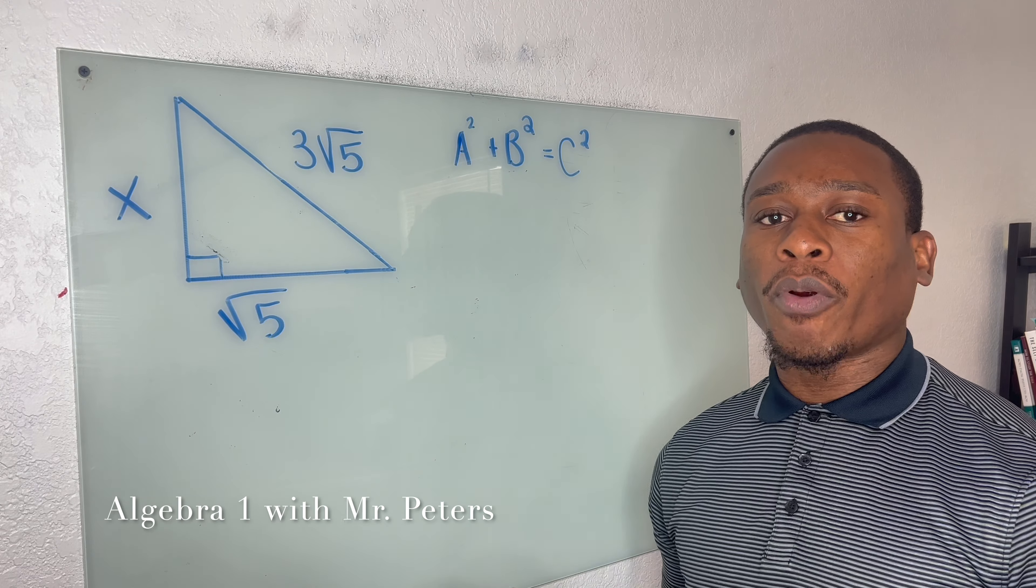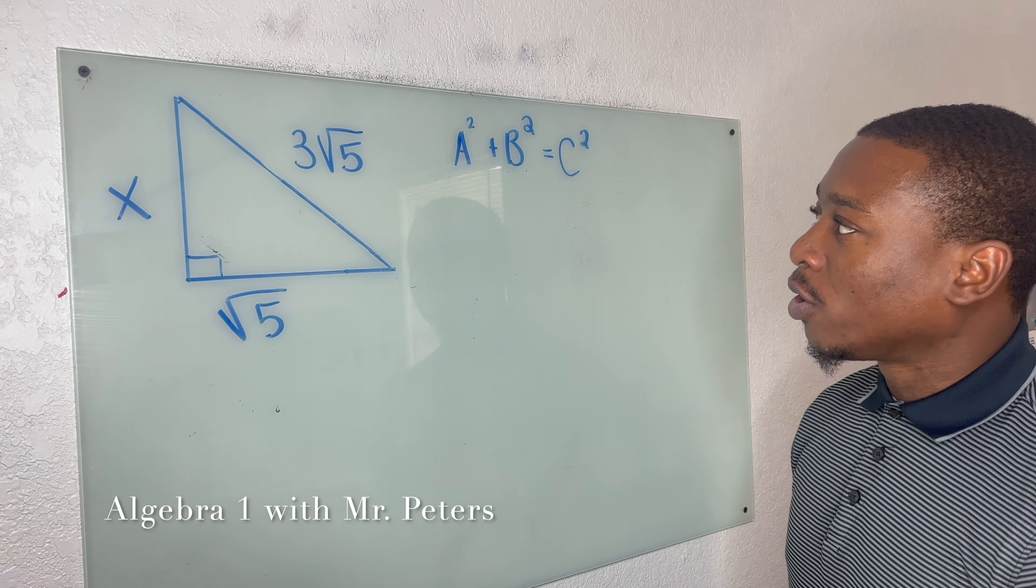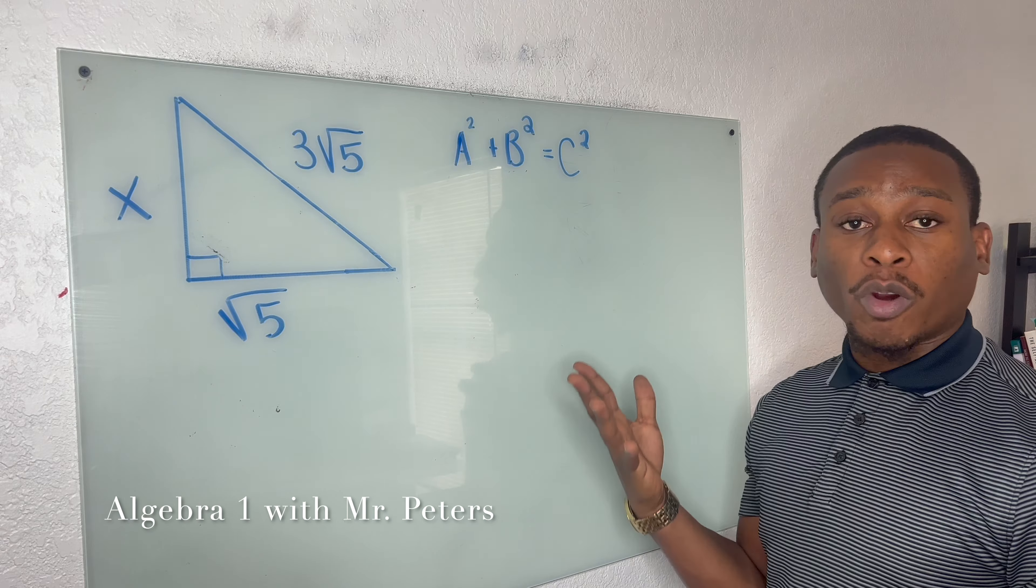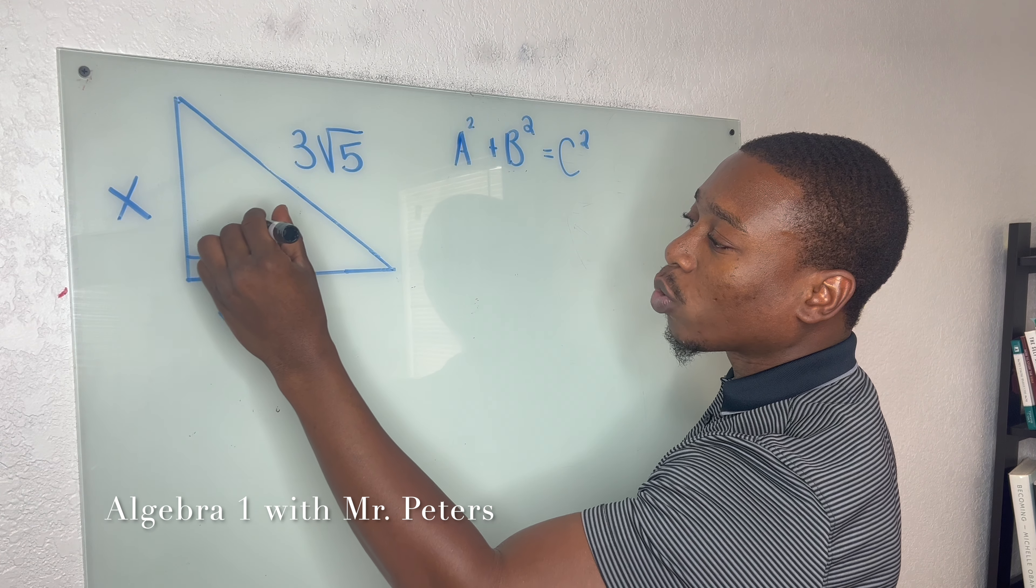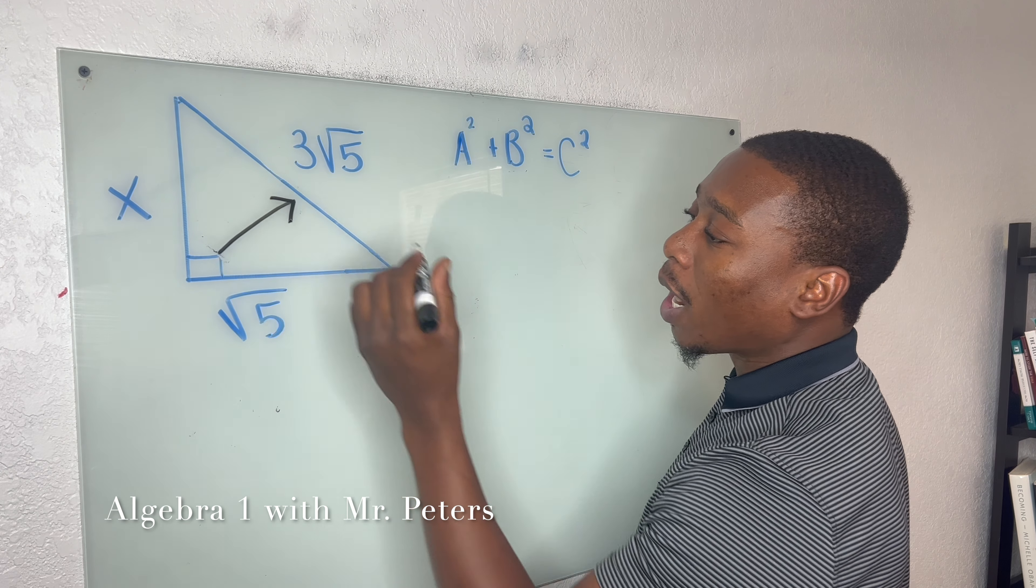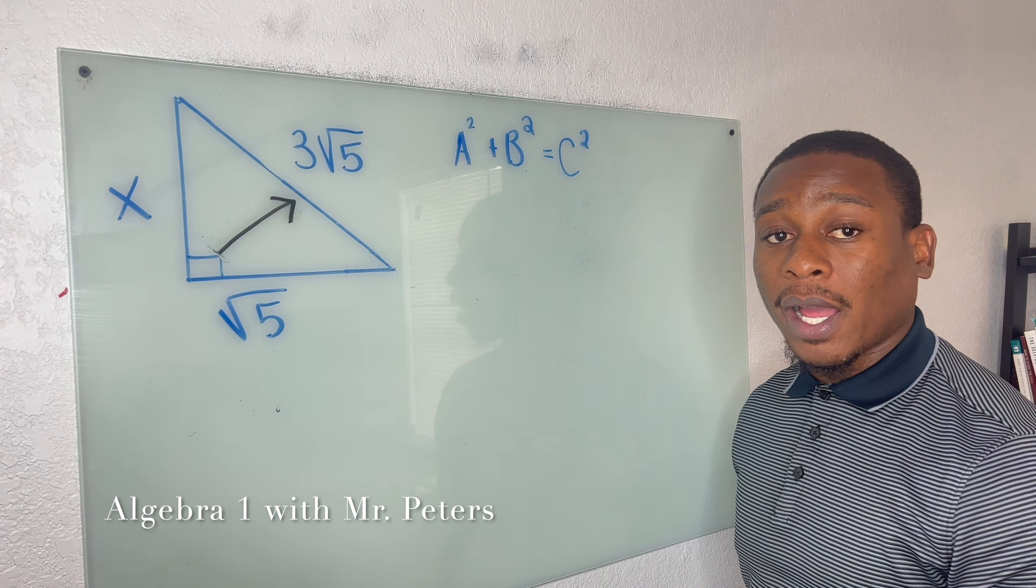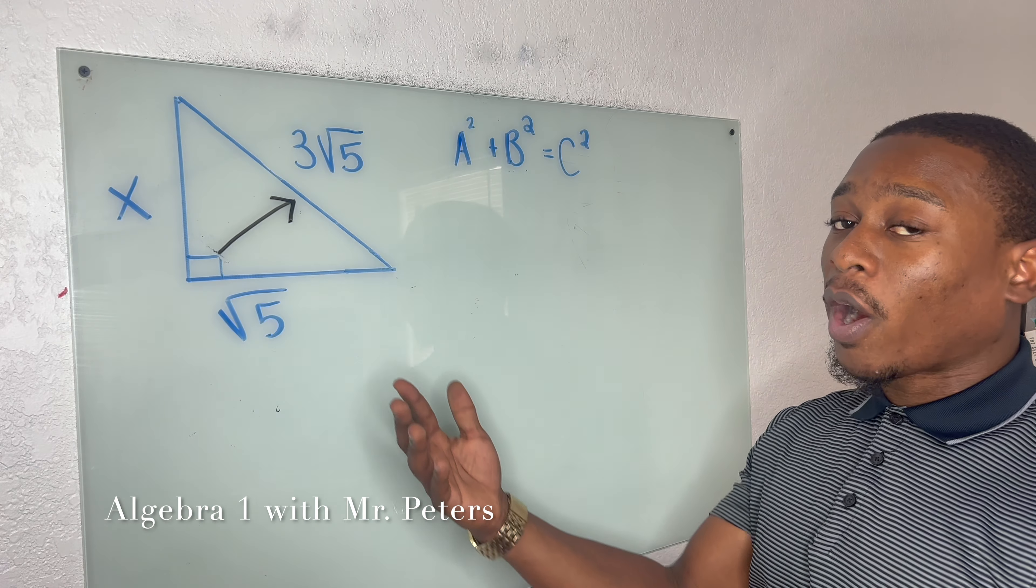I'm going to go over two key problems and situations. We know the Pythagorean Theorem formula. Some key things we need to know is that this only works with right triangles, and the hypotenuse, which is the longest side, is always opposite of the right angle.